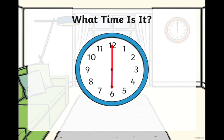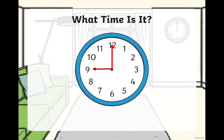Here is another example. The minute hand is pointing at the 12, and the hour hand is pointing at the 6. So now it is 6 o'clock. You can come back to this PowerPoint and do all of these examples. Here, the time is now 9 o'clock. Here, the time is now 12 o'clock.